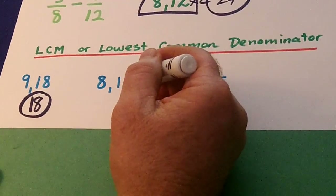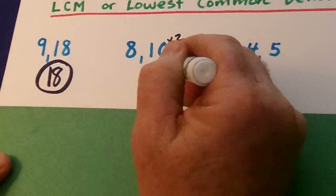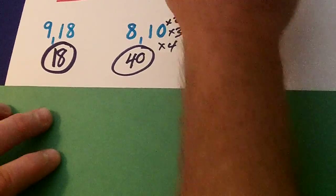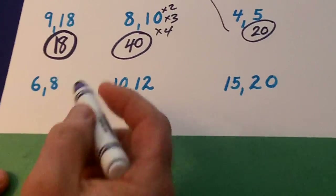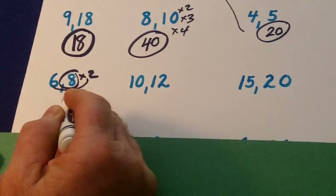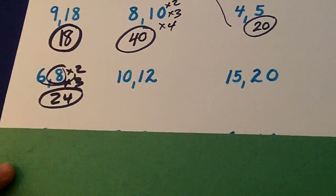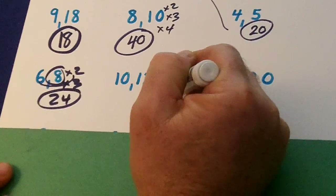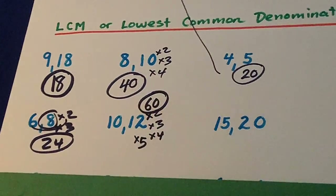8 and 10 — can 8 go into 10? No. Multiply by 2: can 8 go into 20? No. Can 8 go into 30? No. Can 8 go into 40? Yes. 4 and 5 — they both can go into 20, just like what we did earlier. And 6 and 8 — can 6 go into 8? No. Multiply by 2: can 6 go into 16? No. 8 times 3 is 24 — can 6 go into 24? Yes; 6 and 8 both go into 24. 10 and 12 — can 10 go into 12? No. Multiply by 2, by 3, by 4 — no. 12 times 5 is 60; 10 and 12 both go into 60.